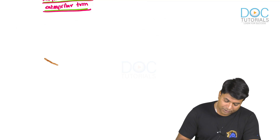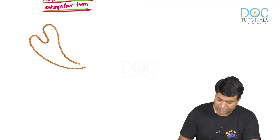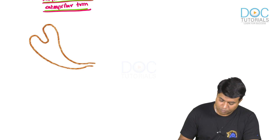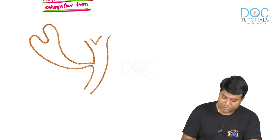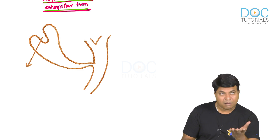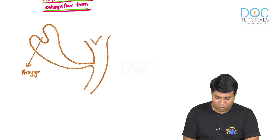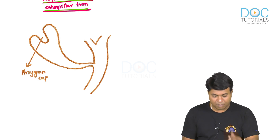Another important anomaly of the gallbladder to remember: the most common anomaly is one in which the fundus of the gallbladder is folded upon itself. This is known as the Phrygian cap anomaly.